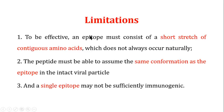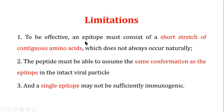Regarding limitations of peptide vaccines: first, an epitope must consist of a short stretch of contiguous amino acids, which does not always occur naturally. In proteins, epitopes are often not formed from contiguous amino acids, so without a short contiguous stretch, you cannot make an epitope capable of interacting with antibodies.